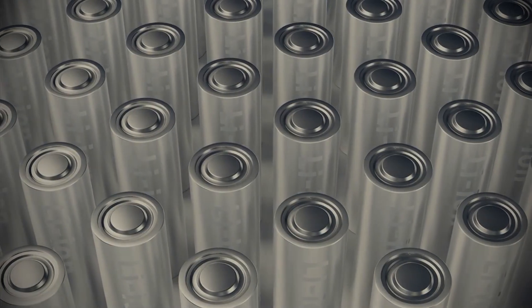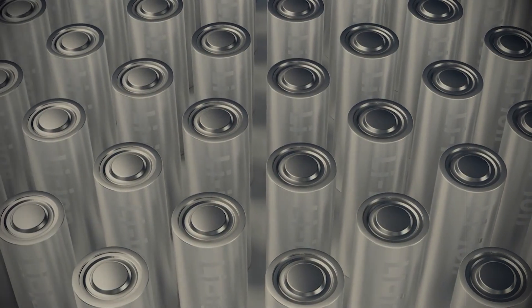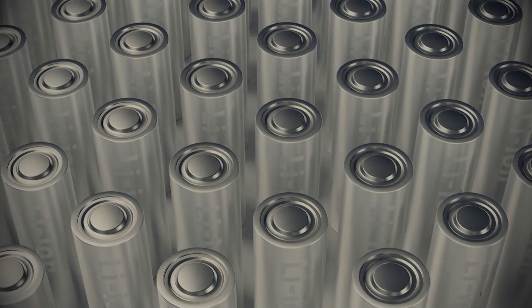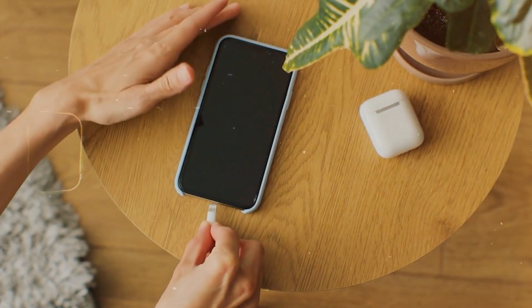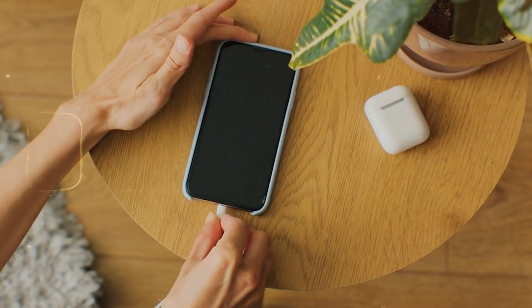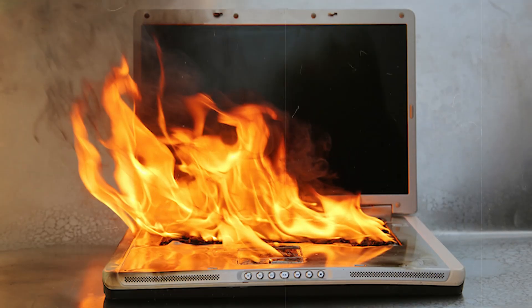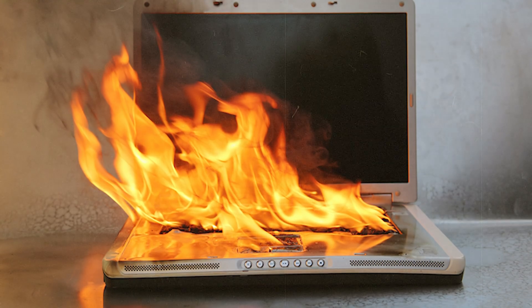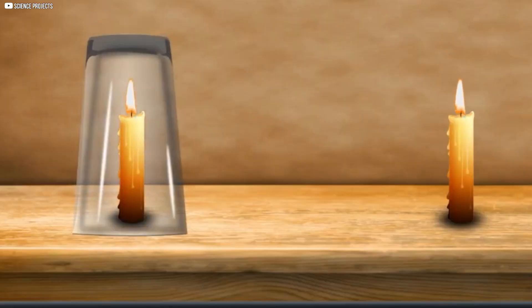Over time, delicate layers shifted. Lithium built up unevenly, weakening the separator that kept the charge in balance. When it failed, heat surged and reactions spiraled out of control. Oxygen released from the cathode fed the flames. The fire needed no outside air. It carried its own fuel within.